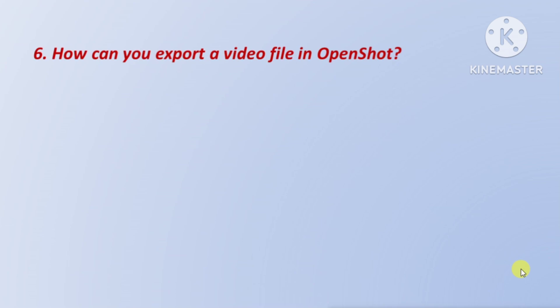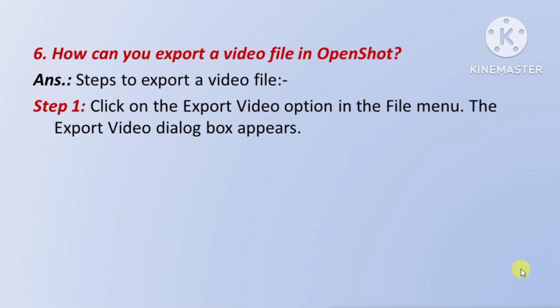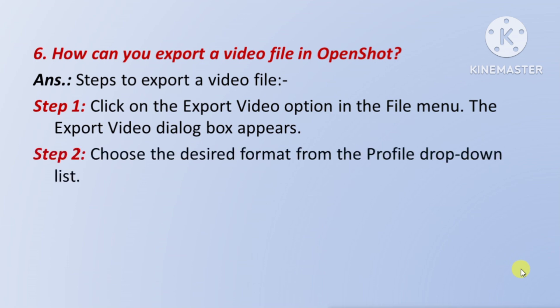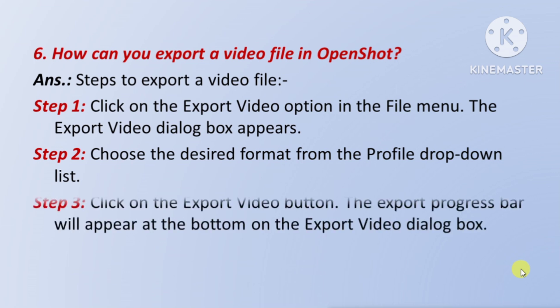Next question: how can you export a video file in OpenShot — means OpenShot mein aap ek video file ko kaise export kar sakte hain? Answer — Steps to export a video file: Step 1: click on the Export Video option in the File menu — file menu se Export Video option par click kariye — the Export Video dialog box appears. Step 2: choose the desired format from the Profile drop-down list. Step 3: click on the Export Video button. The export progress bar will appear at the bottom of the Export Video dialog box showing the exporting progress.